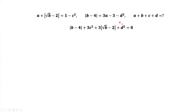Look at the left-hand side carefully. Each term is greater than or equal to 0. The first term is an absolute value. The second term is 3 times c squared. The third term is 3 times the absolute value of the square root of b minus 2. The last term is d squared. The right-hand side equals 0, and the left-hand side is greater than or equal to 0. This equal sign implies the left-hand side must equal exactly 0.